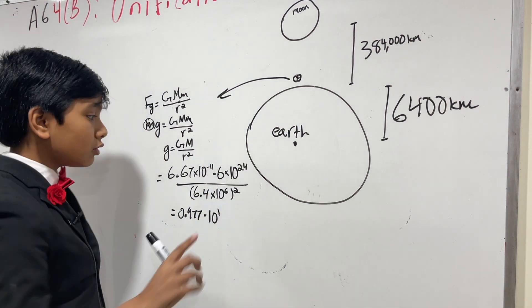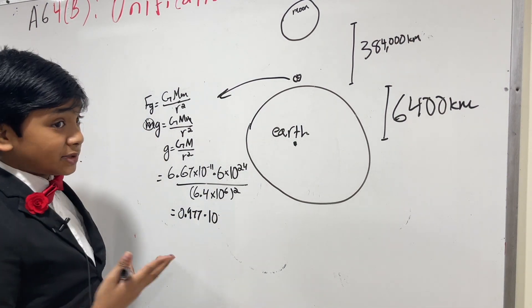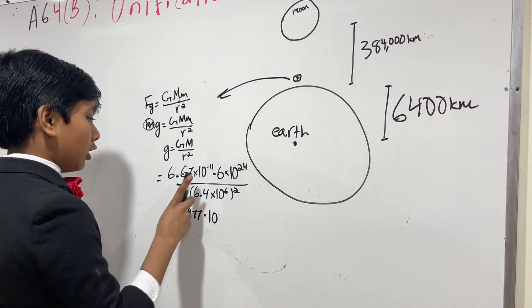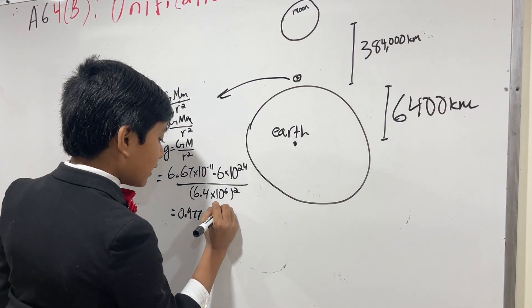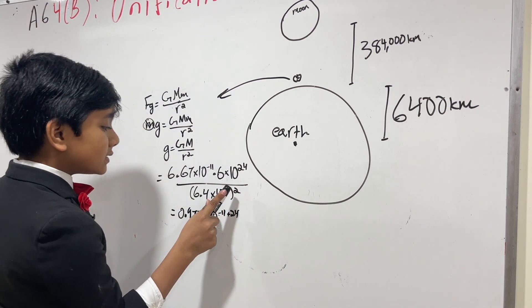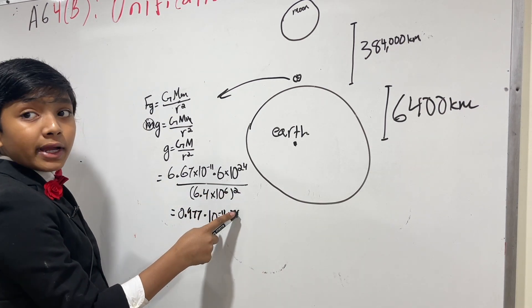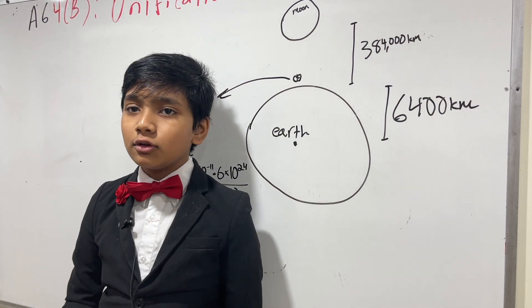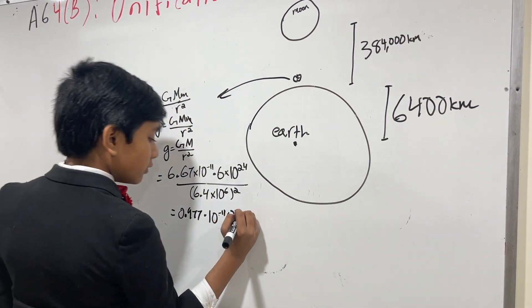How do we get to the first power? Well, let's do some exponential analysis, I guess you could call it. This is 10 to the minus 11th. This is 10 to the 24th. And this is 10 to the 6th. But we squared it, so that becomes 10 to the 12th. What the hell are you doing? 10 to the 12th.